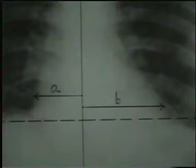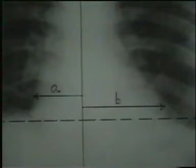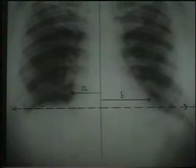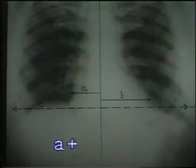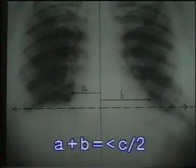To measure the cardiothoracic ratio, draw a vertical line through the center of the spine. Draw lines A and B perpendicular from this line to the maximum widths of the right and left heart borders. A plus B gives the maximum transverse diameter of the heart. It should be less than half of the maximum transverse diameter of the chest — that is C, the transverse line joining the inner borders of the ribs at the widest portion of the chest. We will study the details of the heart shadow in a later section.